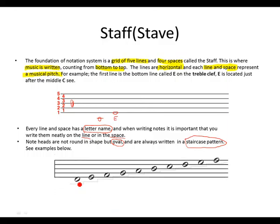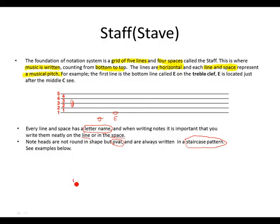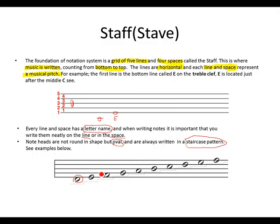Let's see examples. See the note head? It's not round but oval in shape. It's written neatly on the line — as you can see the line is cutting through the note. This note is written neatly inside the space; it's not overlapping the lines. The notes follow each other in a staircase pattern. Always remember this when notating notes.